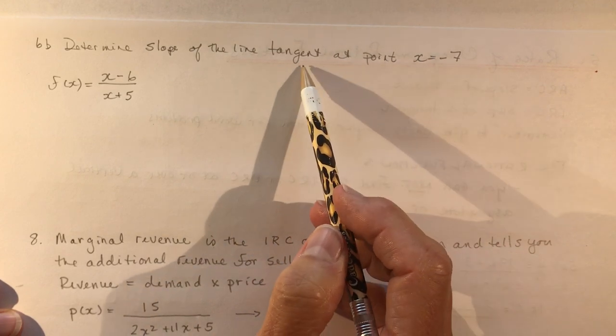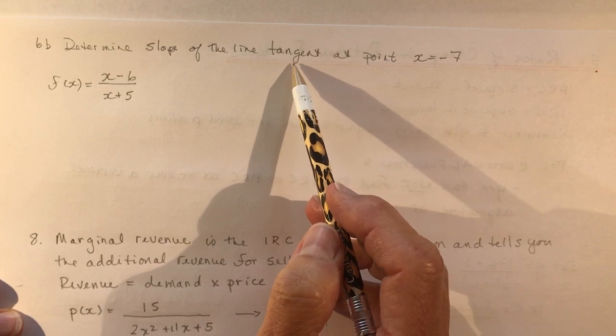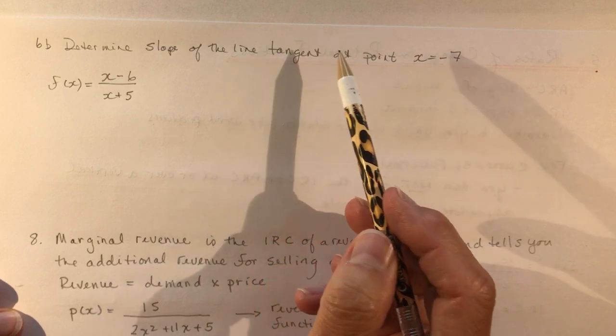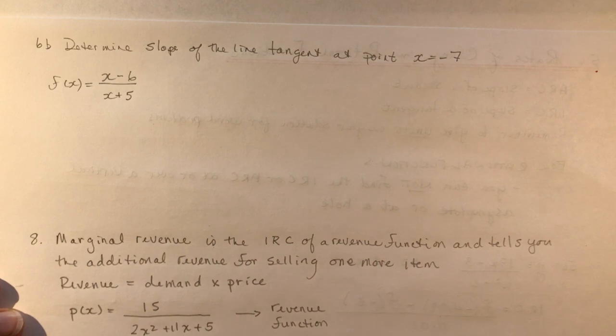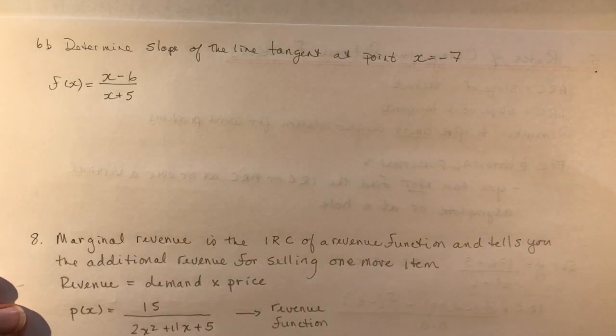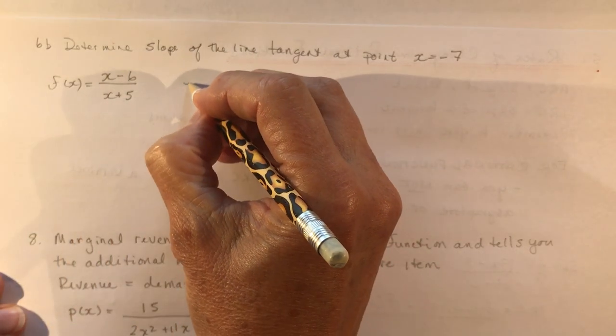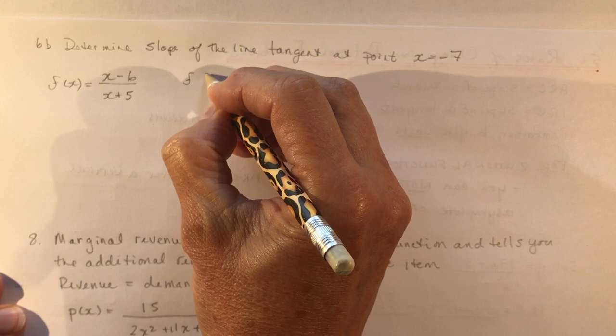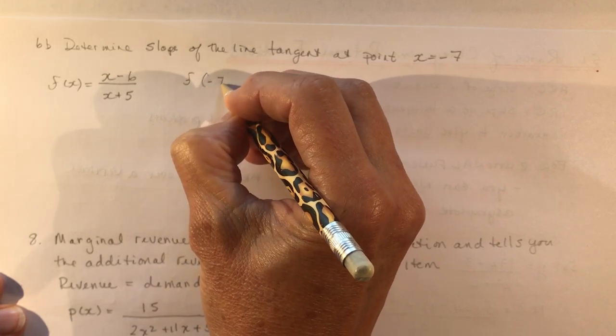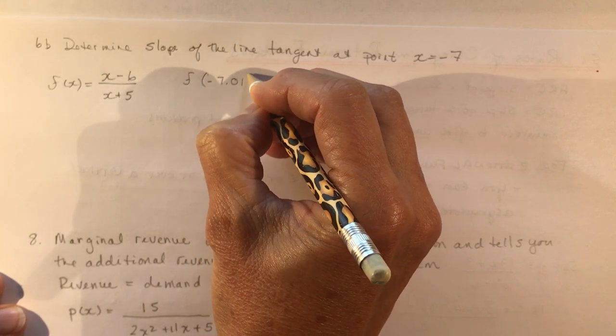So the slope of a tangent is simply the slope of the line, so you're finding the instantaneous rate of change again. So this time we have minus 7, so we're going to do f at minus, this time I'm going to go to the other side, minus 7.01.